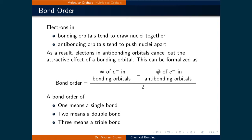As we have seen, bonding orbitals tend to draw nuclei together and antibonding orbitals tend to push nuclei apart. We can set up a simple relationship where if we assume that the effects of bonding orbitals are cancelled out by antibonding orbitals, we can predict the strength of a bond by looking at the net number of electrons in bonding orbitals. This is formalized as: the number of electrons in bonding orbitals minus the number of electrons in antibonding orbitals, divided by 2, equals something called the bond order.